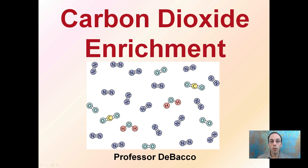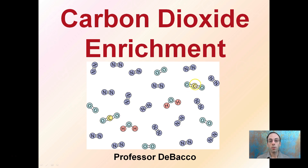Here I'm going to discuss carbon dioxide enrichment. It's important to remember that carbon dioxide is in the air naturally, but there's a lot of nitrogen as the highest percentage in the air we're breathing right now. Carbon dioxide is in there, but at low levels, so enriching that is particular — it can help plants grow because of the increased amount of carbon which they need to produce sugars.